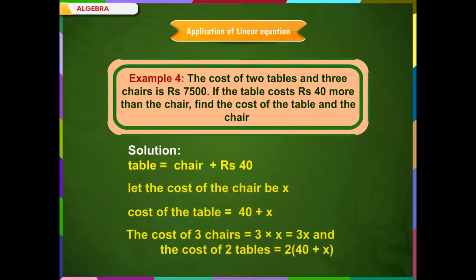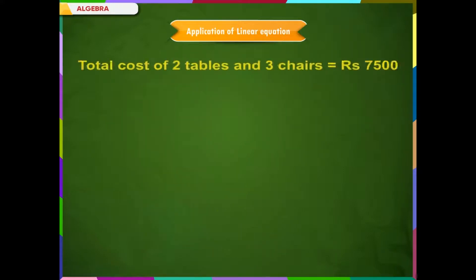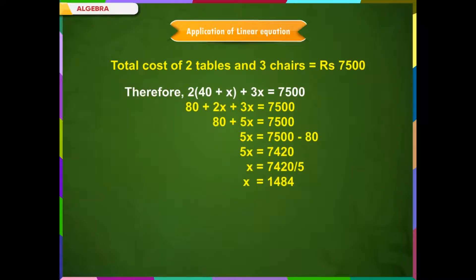The cost of 3 chairs is equal to 3 into x, is equal to 3x. And the cost of 2 tables is equal to 2 into (40 plus x). Total cost of 2 tables and 3 chairs is equal to Rs. 7,500. Therefore,